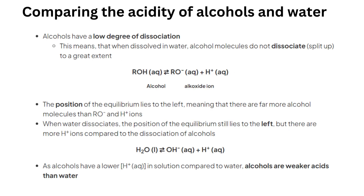Comparing the acidity of alcohols in water. Alcohols have a low degree of dissociation. This means that when dissolved in water, alcohol molecules do not dissociate or split up to a greater extent. Alcohol dissociates to form an alkoxide ion and a hydrogen ion. The position of the equilibrium lies to the left, meaning there are far more alcohol molecules than RO⁻ and H⁺ ions. When water dissociates, the equilibrium still lies to the left, but there are more H⁺ ions compared to the dissociation of alcohols. Water gives OH⁻ and H⁺ ions. As alcohols have a lower H⁺ ion concentration in solution compared to water, alcohols are weaker acids than water.